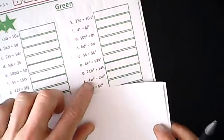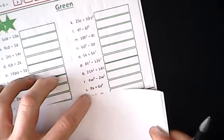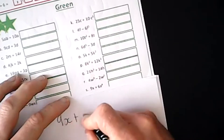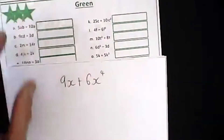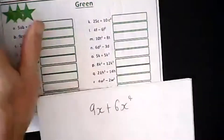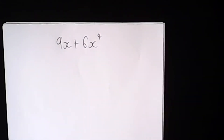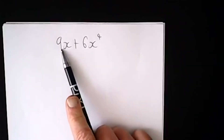Let's move on to the other sheet we were using this week — factorizing, the reverse process. Straight on to a green question now because we've already practised these. Let's have a go at: 9x plus 6x to the power of 4. This time we're going to factorize it. Remember, sometimes expressions need to be written with brackets, sometimes in expanded form — it all depends on the maths we're covering.